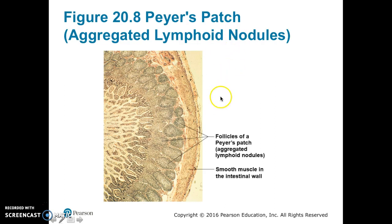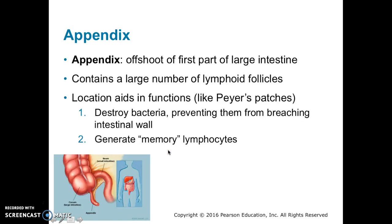Figure 20.8 shows a histology of a Peyer's patch. The smooth muscle in the intestinal wall is shown here, and just deep to that are the follicles of the Peyer's patch.